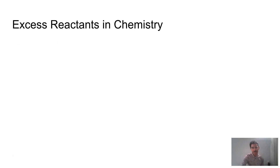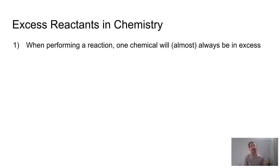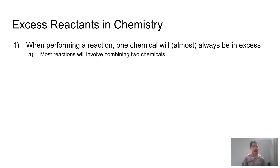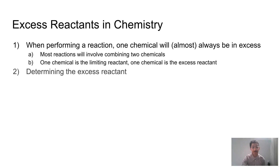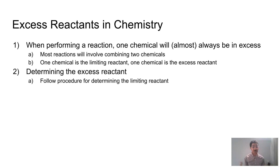Let's talk about some chemistry examples of excess reactants. When we're doing a reaction, one chemical is almost always going to be in excess. It's really hard to have a perfect ratio of two chemicals combining. Because most reactions involve combining two chemicals, one is going to limit us while the other we'll have an excess of. The reactant that is not limiting will be in excess.